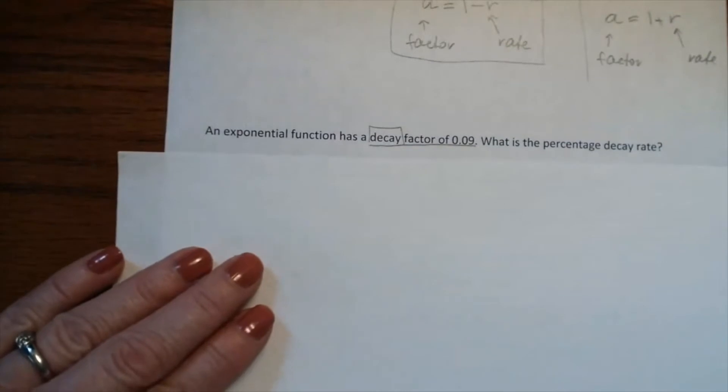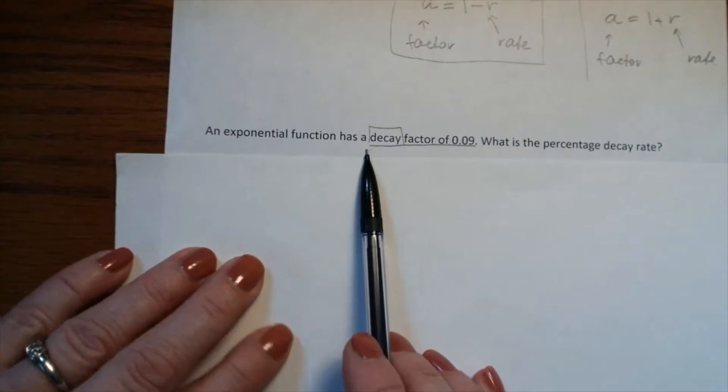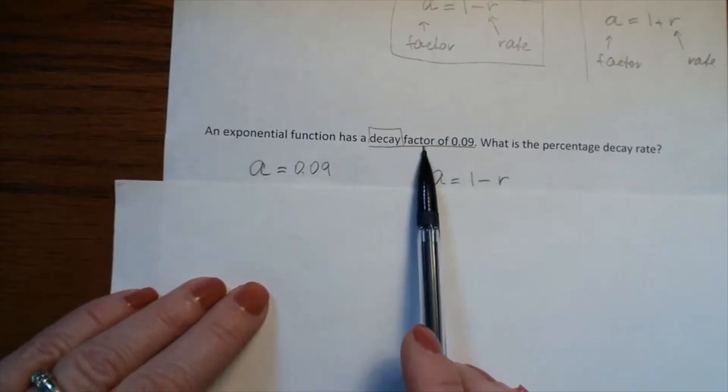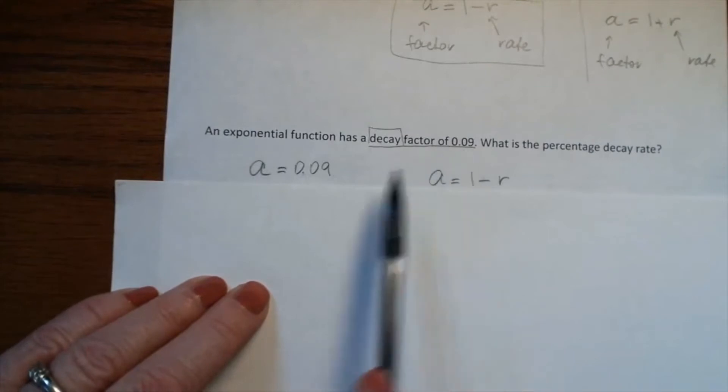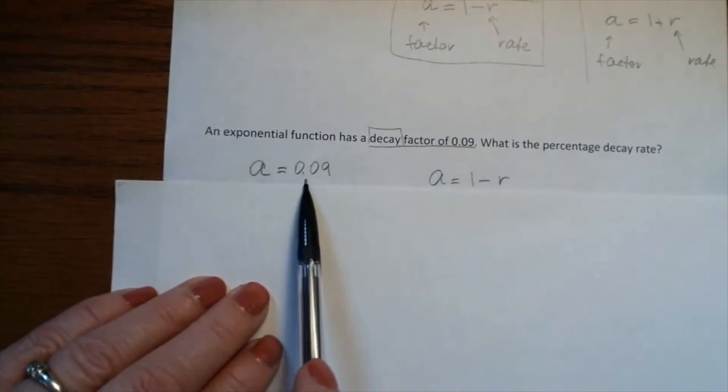An exponential function has a decay factor of 0.09. What is the percentage decay rate? We know the decay factor is 0.09, so a = 0.09.